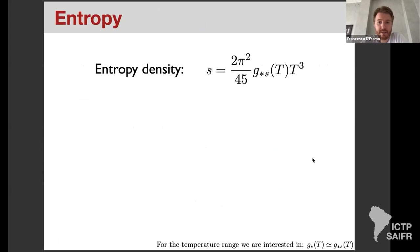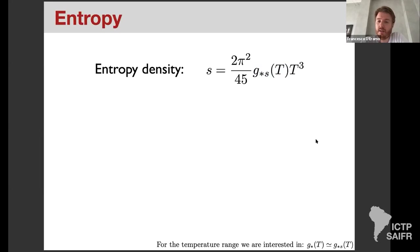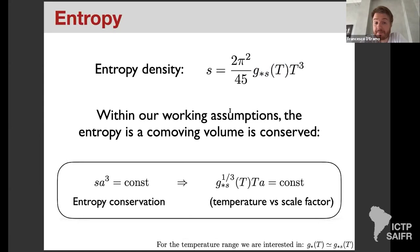The entropy density can be defined analogously to the number and energy densities by integrating over the statistical distribution. There is an analogous factor g★S. For these lectures, g★ and g★S are pretty much equal, so I use different symbols just for completeness but in all calculations we can safely treat them as the same.